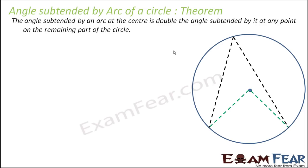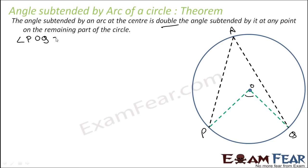There is a very important theorem. The theorem says that the angle subtended by an arc at the centre of the circle is twice the angle subtended by it at any other point on the circle. For example, with points P and Q on circle O, angle POQ is equal to twice angle PAQ. Angle subtended by arc PQ at the centre equals double the angle subtended by the same arc at any other part of the circle.